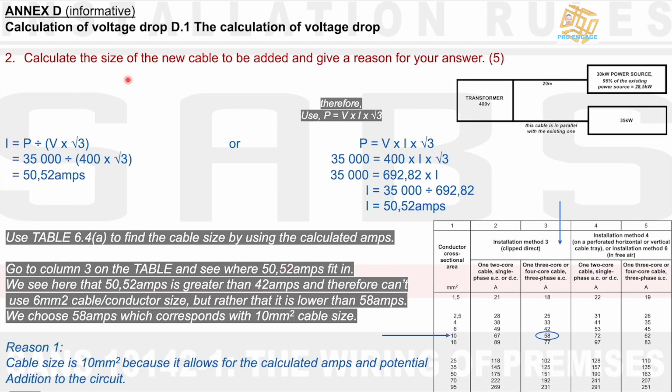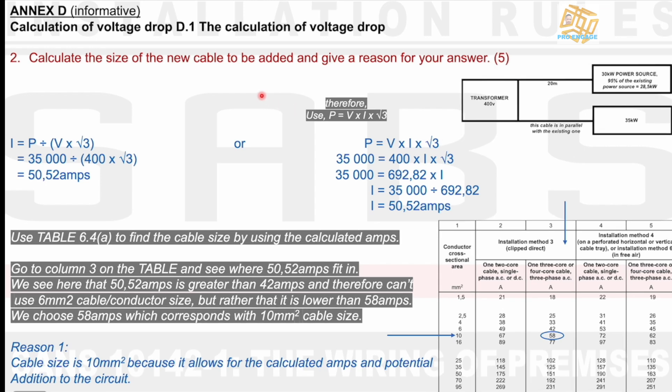Question 10.2 then says calculate the size of the new cable to be added and give a reason for your answer. The new cable is the extension. And if we look here, we see they do say that it's installed parallel. And we would assume that parallel is the same distance from the transformer to where the actual other distribution board is, the old DB. I calculate my amps and I use a formula of P equals VI square root 3. So in 3 phase it looks like the same formula except for we times square root 3 because of the 3 phase.